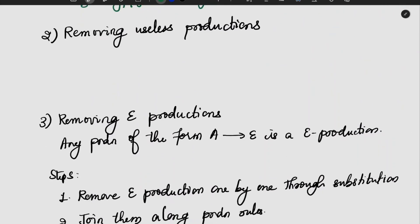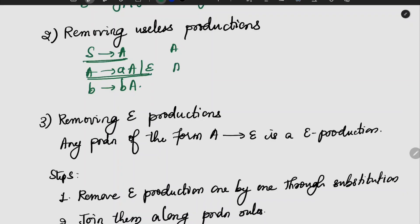The next simplification method is removing useless productions. For example, consider a grammar: S gives A, A gives AA bar E, B gives BA. In the first production we use A bar, and in the second production we use A bar, but we do not use B anywhere. So B gives BA is a useless production.